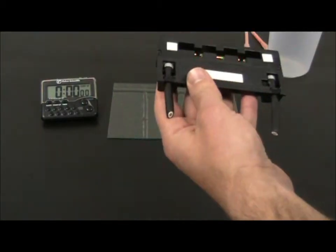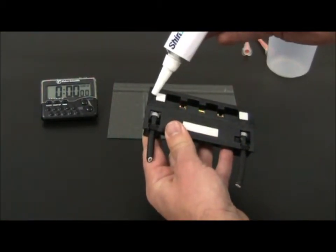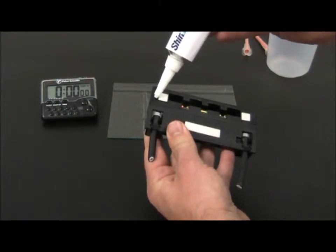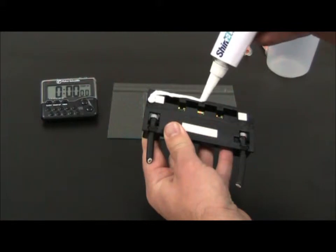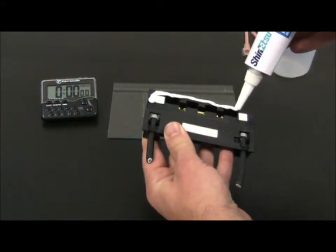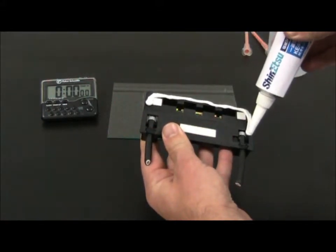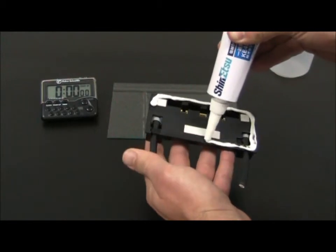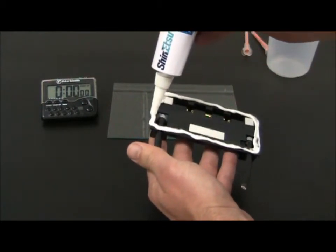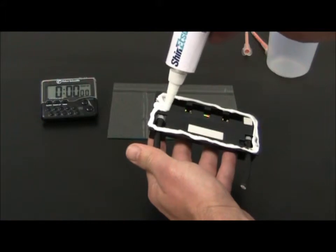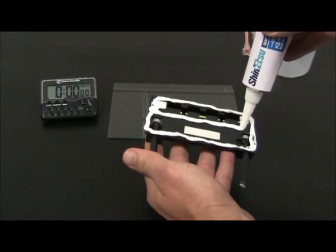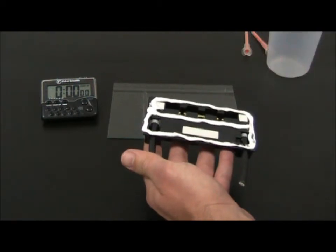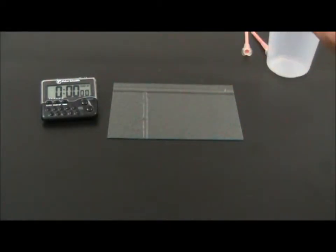So we're going to go ahead and dispense around the perimeter here of the junction box itself. Just sealing the edges. And then we're going to do one right down the middle. All right. So we're then going to apply it to the glass.